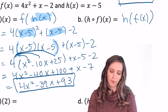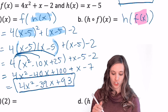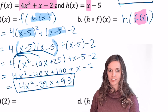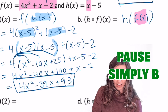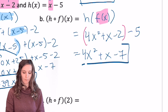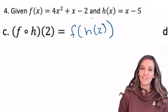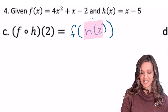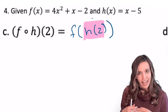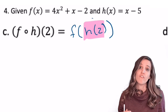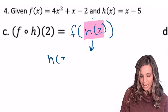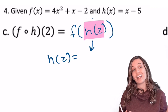For h of f of x, f of x is the input function, so the quadratic 4x squared plus x minus 2 gets plugged into h where x is. That gives 4x squared plus x minus 7. For part c, f of h of 2: we always do the inside function first. h of 2 means replacing x with 2 in h of x.